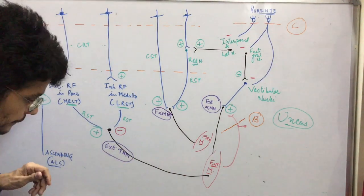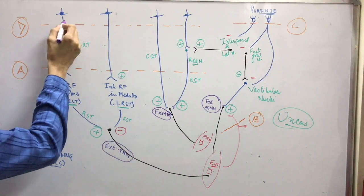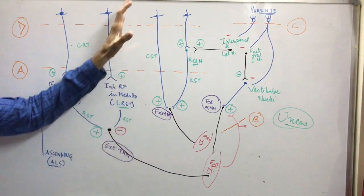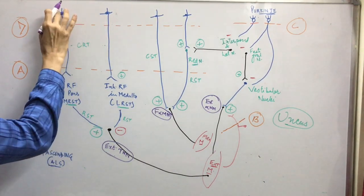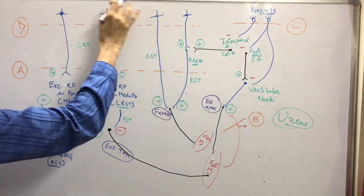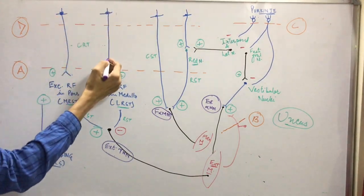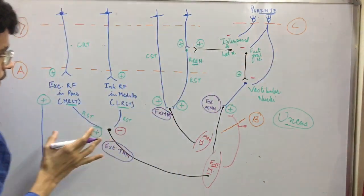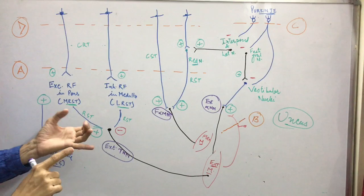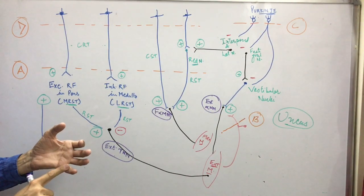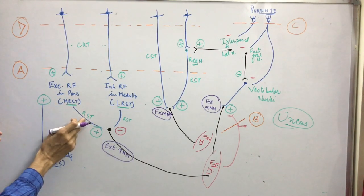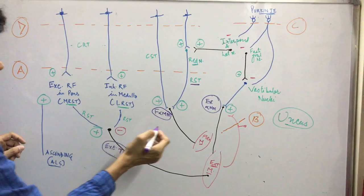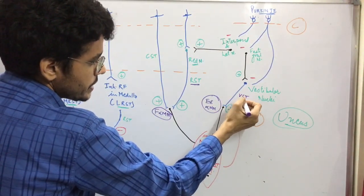In this diagram, let me explain — I have taken this diagram from Ganong; you can check the Ganong book. Above this dashed line is the entire cerebral cortex. The middle one is the brain stem part, and this side is the cerebellum. We have talked about the extrapyramidal system: the vestibulospinal tract, reticulospinal tract, and rubrospinal tract. These are the reticulospinal tract, this is the rubrospinal tract, and this one is the vestibulospinal tract.